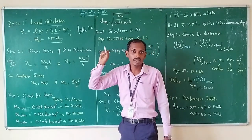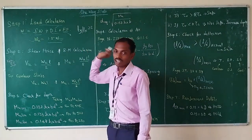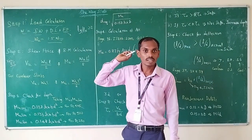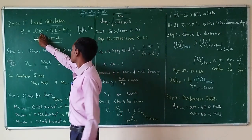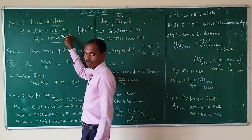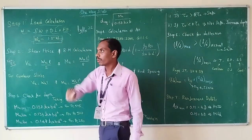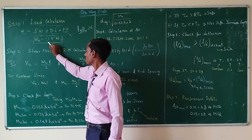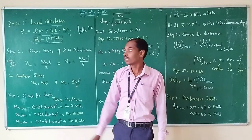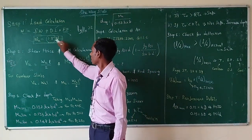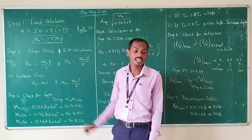If the live load value is given, take that live load; otherwise, take the live load based on IS 875 Part 3. The total load equals self-weight plus dead load plus floor finish. We then calculate the ultimate load. As per the limit state method, the factor of safety is 1.5, so the ultimate load is 1.5 × W (total load).